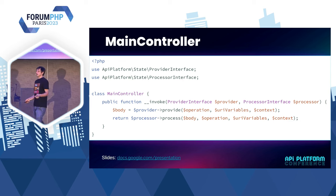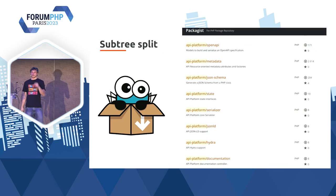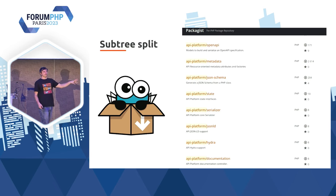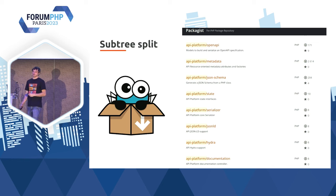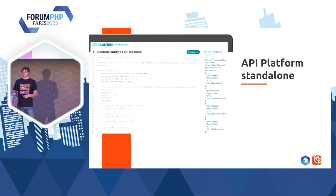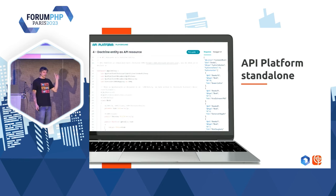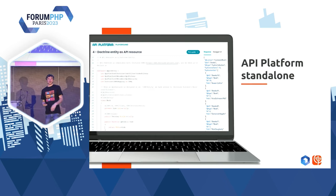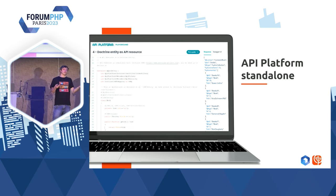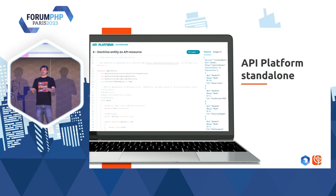Il y a un autre truc qui est arrivé avec API Platform 3.2, c'est le subtree split. On a tous les composants d'API Platform qui sont maintenant disponibles en tant que paquets indépendants. Si vous allez sur Packagist, vous pouvez regarder — il y a vraiment tous les paquets d'API Platform disponibles. Ça m'a d'ailleurs permis de créer un petit playground que vous pouvez ouvrir dans votre navigateur : API Platform Playground. Il n'y a rien à installer, vous pouvez tester API Platform dans le navigateur.